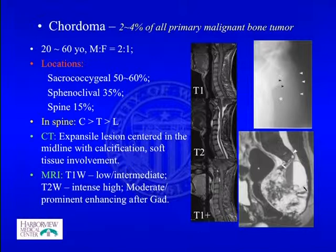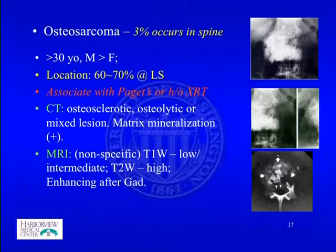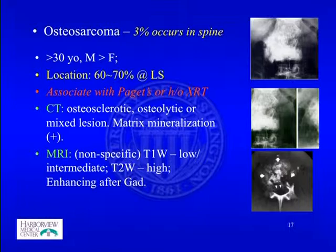Chordoma accounts for about 2 to 4% of all primary malignant bone tumors, occurring between ages 20 to 60 with a male-to-female ratio of 2 to 1. The sacrococcygeal location accounts for 50 to 60% of cases, sphenooccipital about 35%, and anywhere in the spine about 15%. In the spine, it more likely occurs in the cervical region. CT shows an expansile midline lesion with calcification; MRI shows low T1, high T2 intensity with gadolinium enhancement.